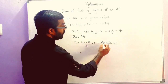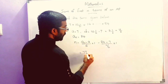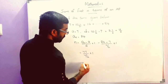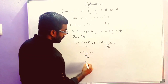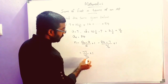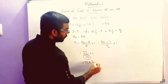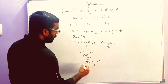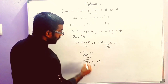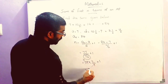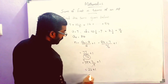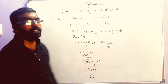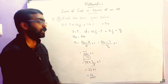So 84 minus 7 is 77, divided by 7 by 2, plus 1. We take the reciprocal: 77 into 2 by 7, plus 1. The 7 and 77 cancel to give 11. So 11 into 2 is 22, plus 1 which equals 23. The number of terms is 23.